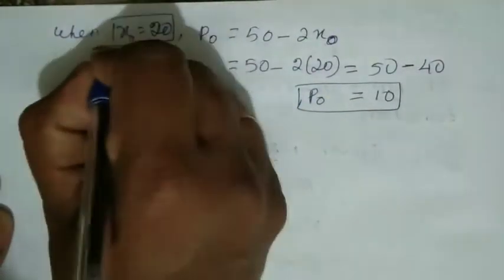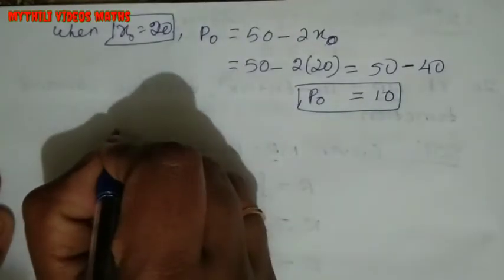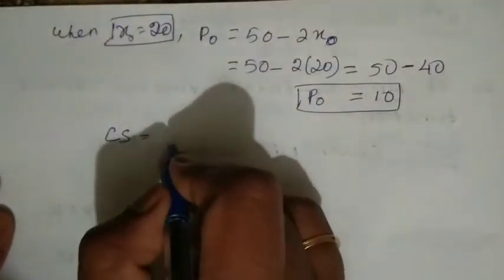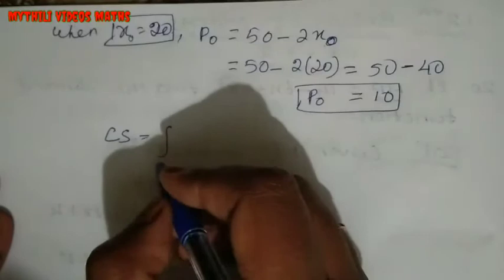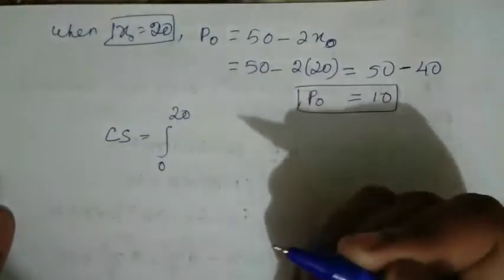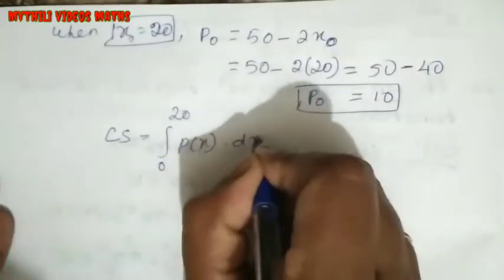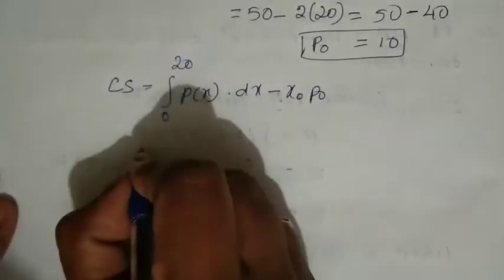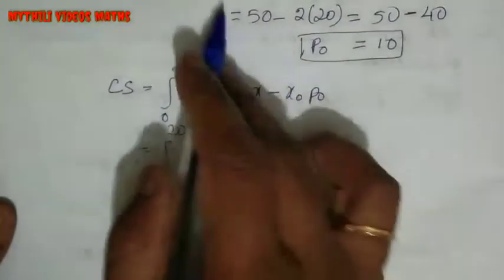Now we have P₀ value and x₀ value 20. Apply the consumer surplus formula: integral from 0 to 20 of P(x)dx minus x₀P₀.